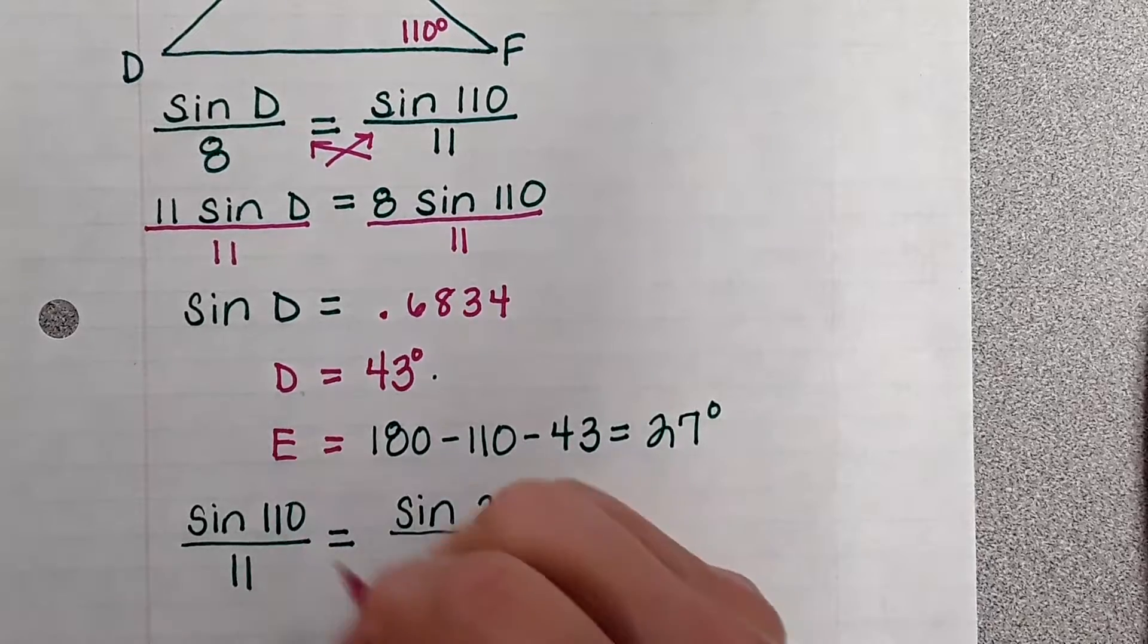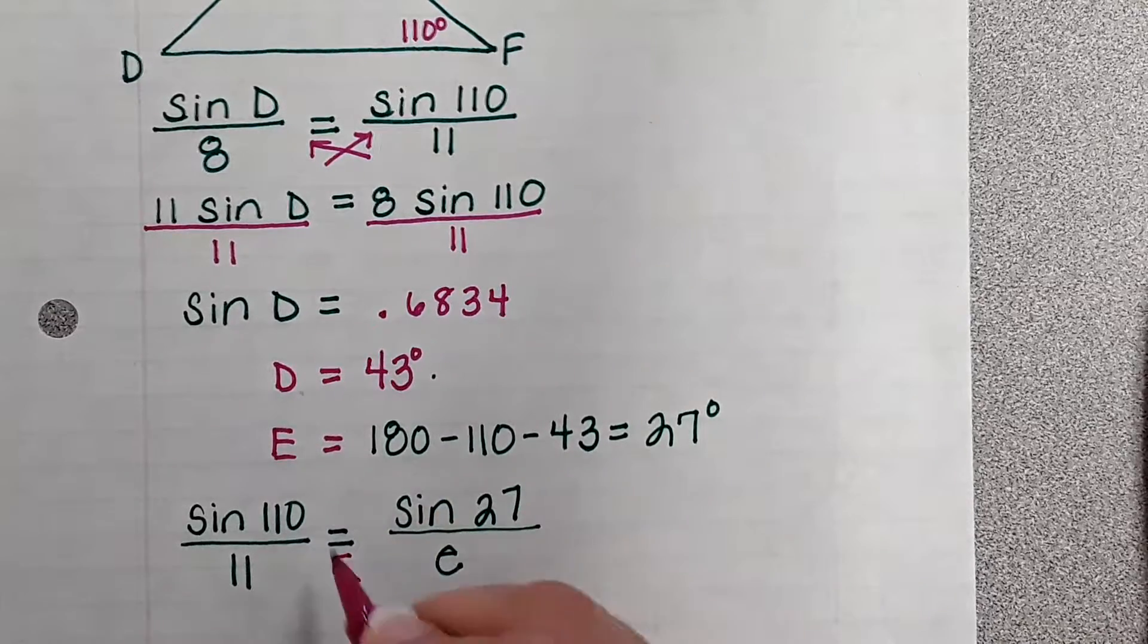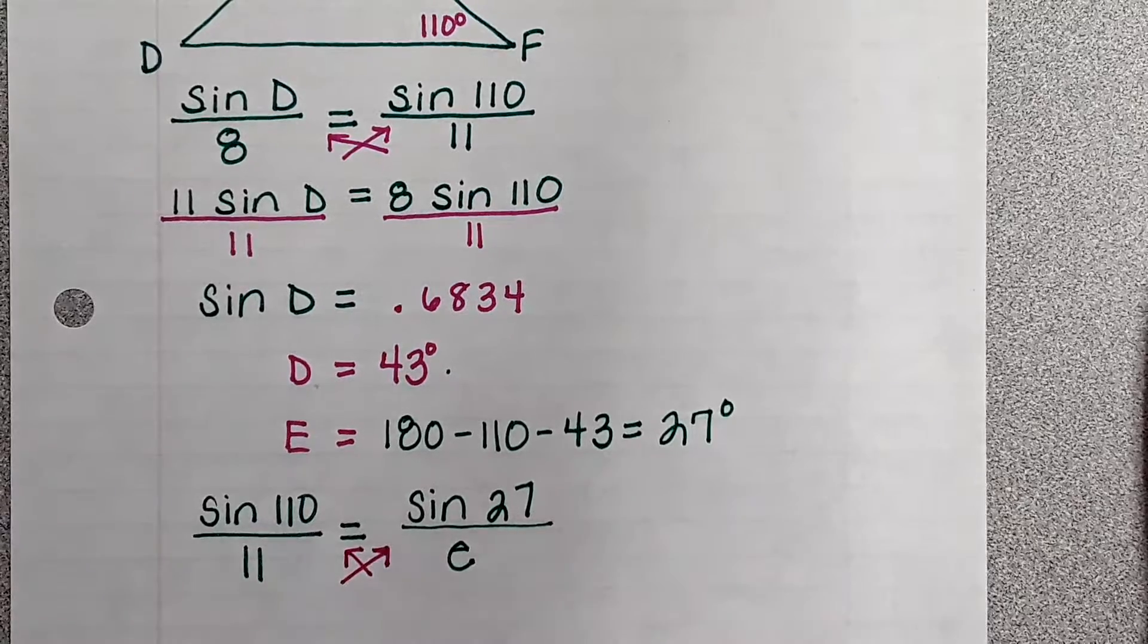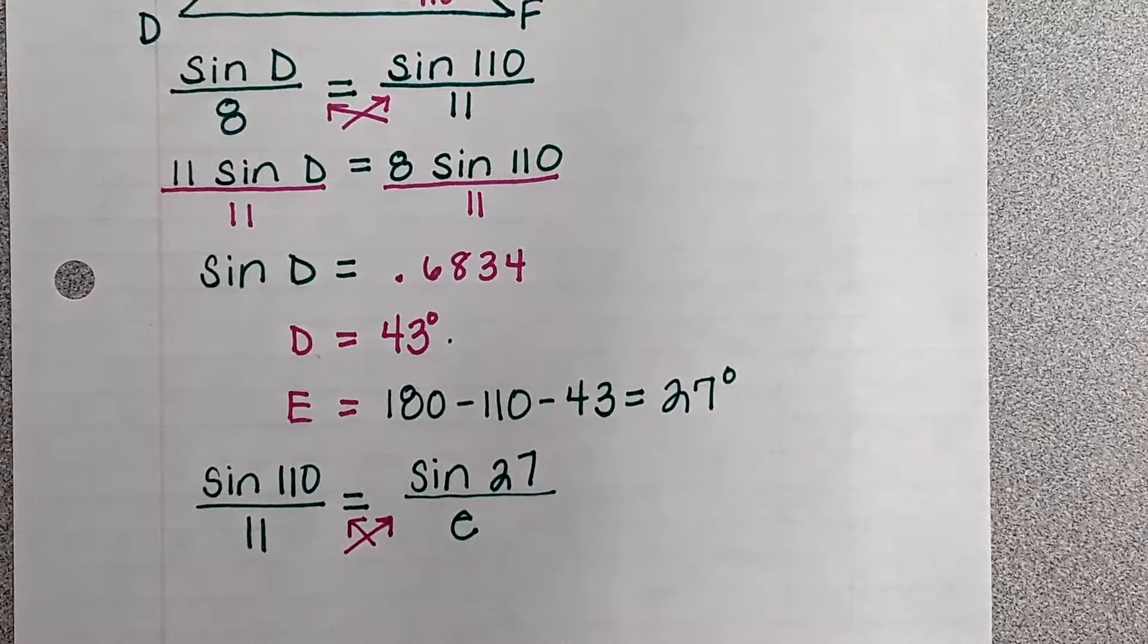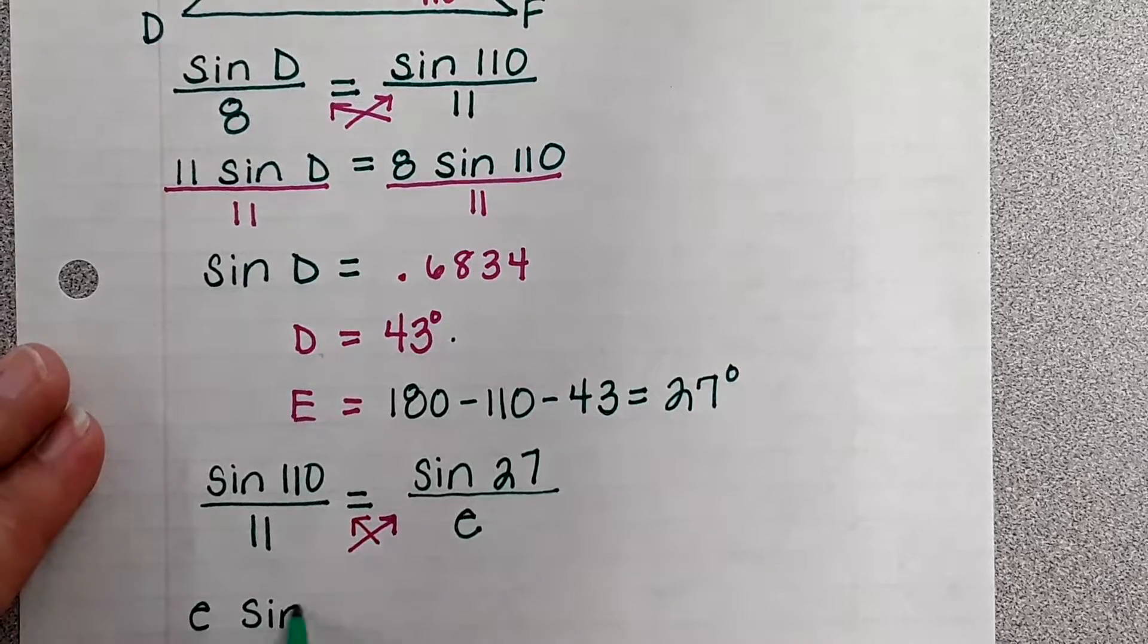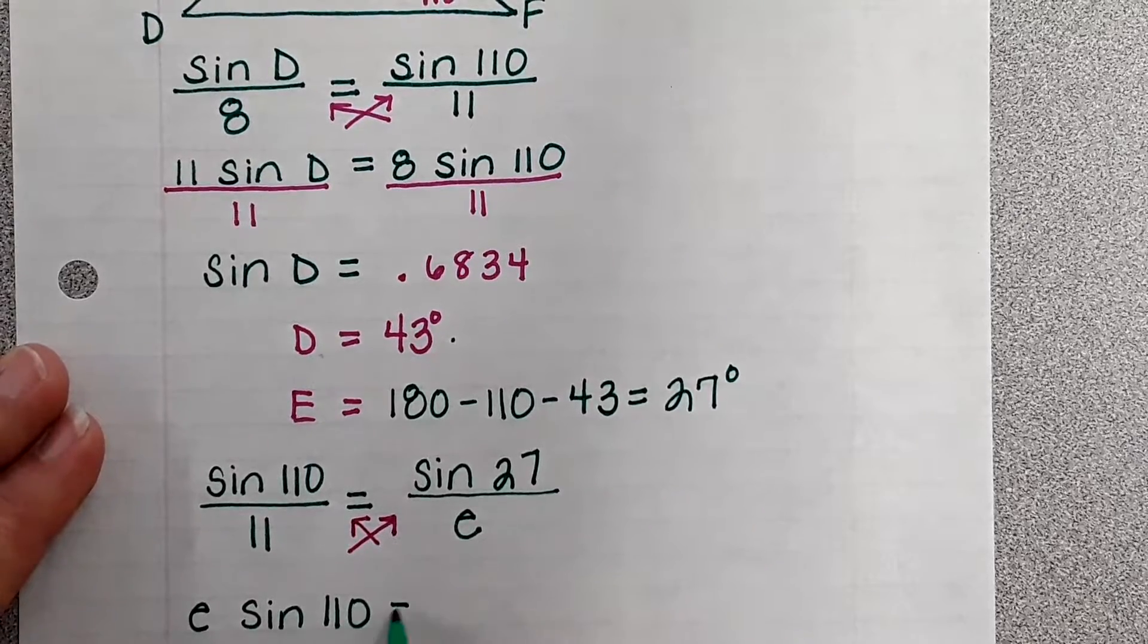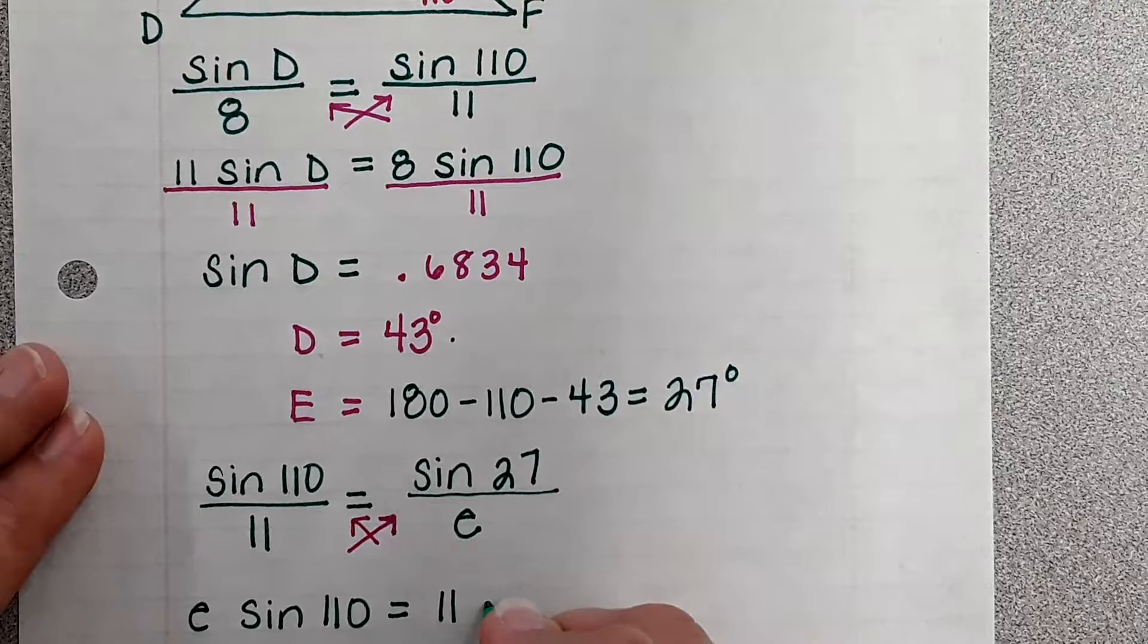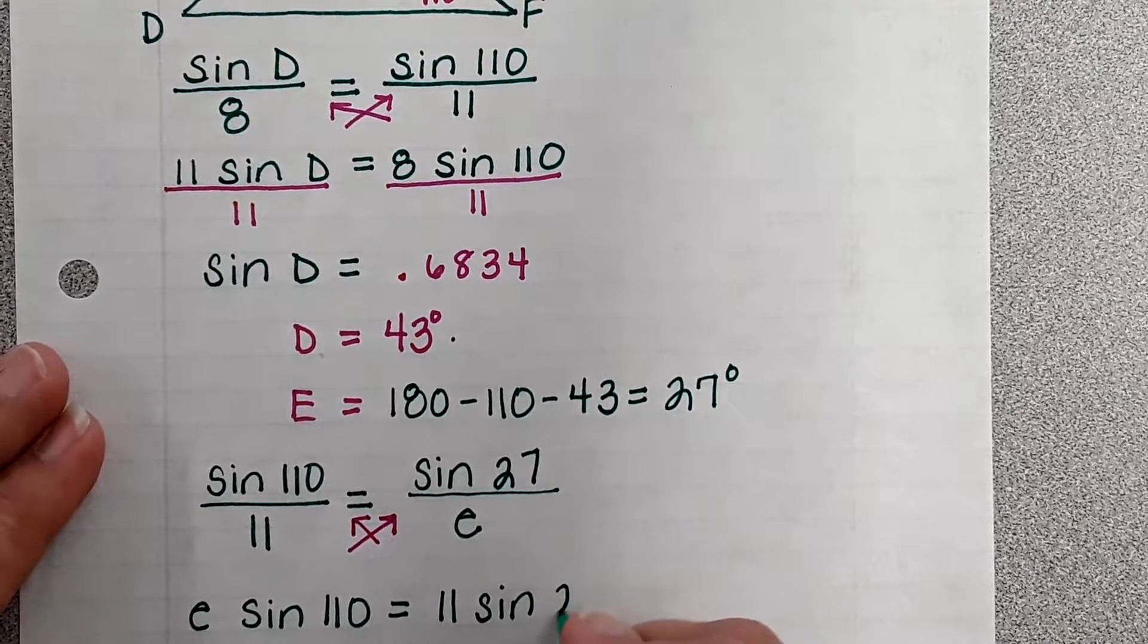Now we're going to cross multiply. I get e sine of 110 equals 11 sine 27.